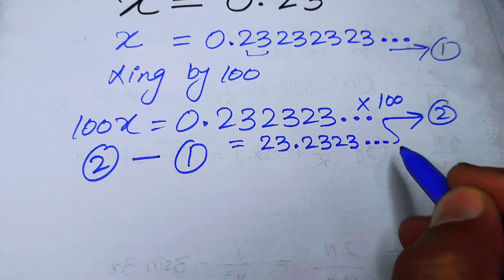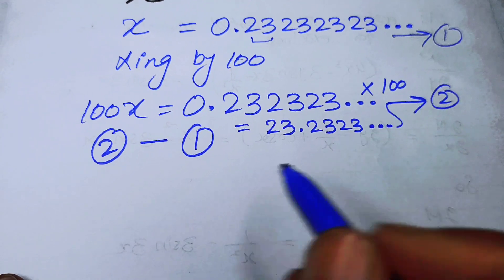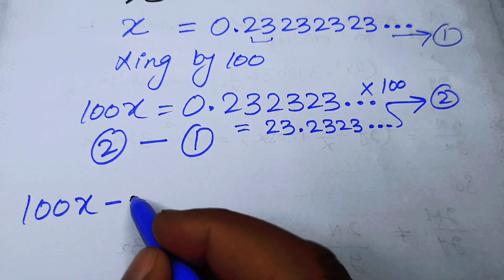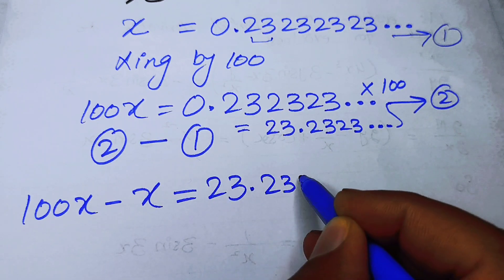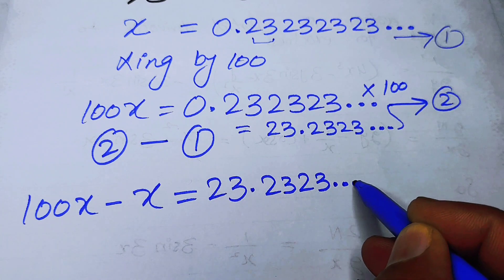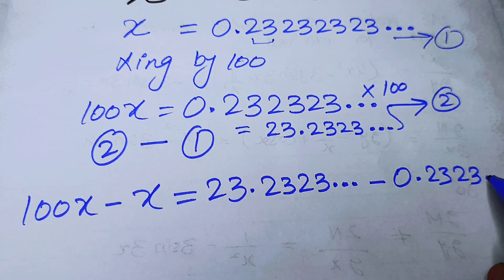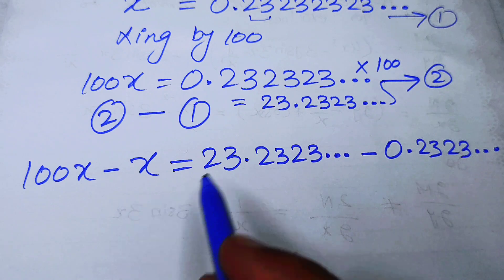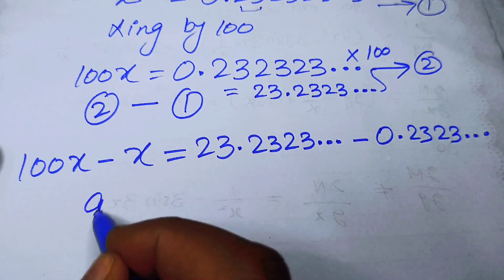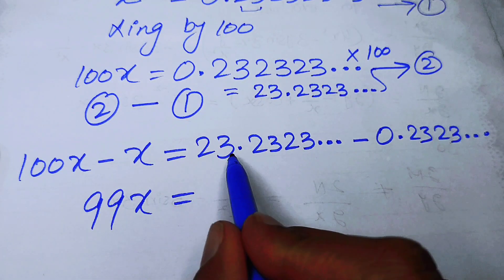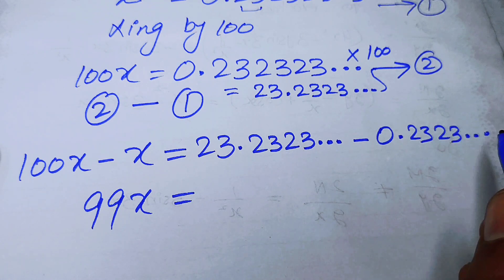Now we subtract equation 1 from equation 2. The left-hand side becomes 100x minus x, and the right-hand side becomes 23.2323... minus 0.2323... When you subtract, you obtain 99x equals 23, because the repeating decimal parts cancel out.